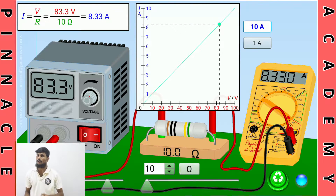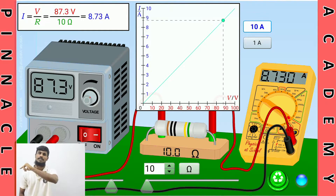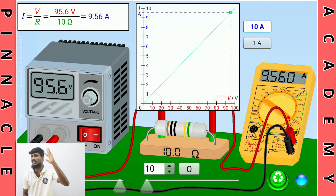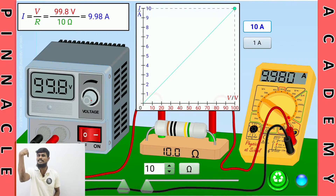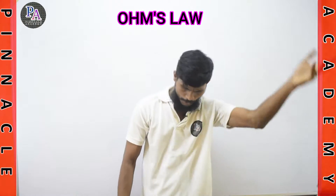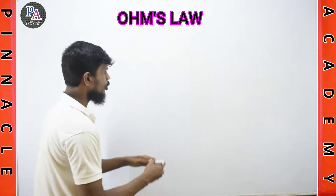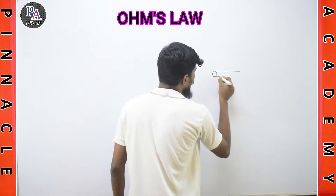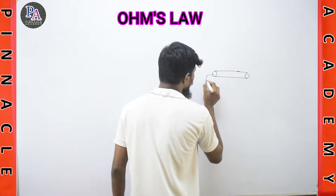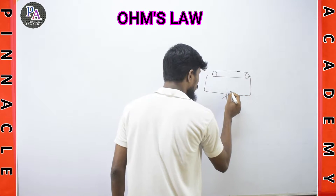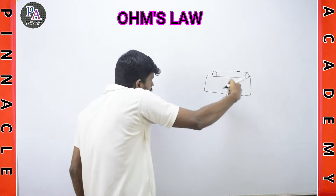At constant temperature — that's the condition — what does the resistance mean for the material? We are going to take a conductor and connect a battery with a variable voltage to it.